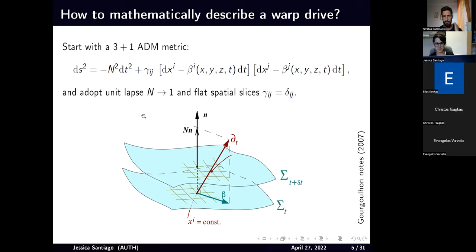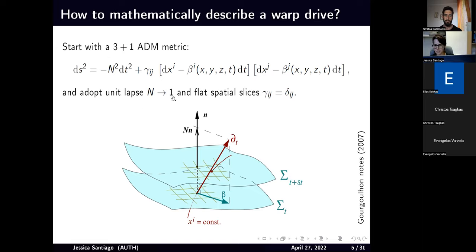So how can we mathematically describe this whole thing? The idea is that you start with a 3+1 ADM metric. You have a spacetime that you can foliate into different time slices — spatial slices at different time moments. In the 3+1 decomposition, you have N, which is the lapse function telling you the distance between different slices; gamma, the metric on the three-dimensional surface; and beta, the shift vector, which is related to how these sheets move with respect to each other as you go forward in time.